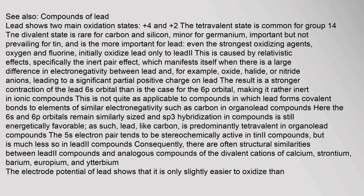Lead shows two main oxidation states: +4 and +2. The tetravalent state is common for Group 14; the divalent state is rare for carbon and silicon, minor for germanium, important but not prevailing for tin, and is the more important state for lead. Even the strongest oxidizing agents — oxygen and fluorine — initially oxidize lead only to lead(II). This is caused by relativistic effects, specifically the inert pair effect, which manifests itself when there is a large difference in electronegativity between lead and oxide, halide, or nitride anions, leading to a significant partial positive charge on lead. The result is a stronger contraction of the lead 6s orbital than is the case for the 6p orbital, making it rather inert in ionic compounds.